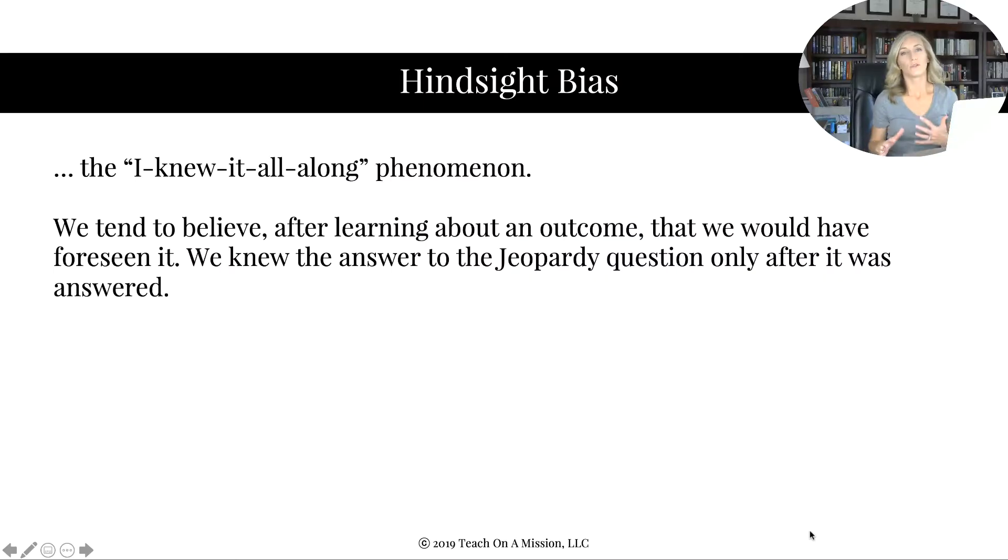We're going to be going over a lot of different terms in this one, but this should be a rather quick set of notes. Hindsight bias—really just being aware that it exists is really impactful. This is the "I knew it all along" phenomenon. We tend to believe after learning an outcome that we would have foreseen it. We knew the answer to the Jeopardy question only after it was answered, right? Like, "Oh, they just said it! I knew that, I totally knew that."